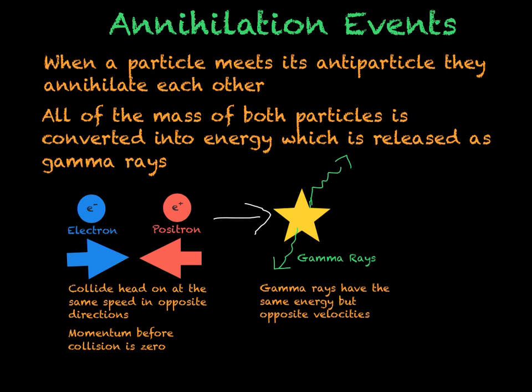In any reaction, including particle reactions, the total charge before and after must also be equal. Before the reaction we have an electron with charge minus 1 and a positron with charge plus 1, making an overall charge of 0. After the reaction we have two gamma rays, which have no charge, so the charge after is also 0 — therefore charge is conserved.